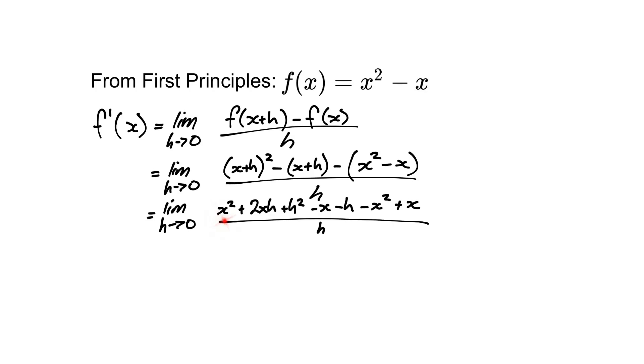Now we have a positive x squared and a negative x squared, so we'll get rid of those. We have a negative x and a positive x, so we'll get rid of those. We also have an h in all of these ones, so we have an h down the bottom. We have 2xh, h squared and a minus h.